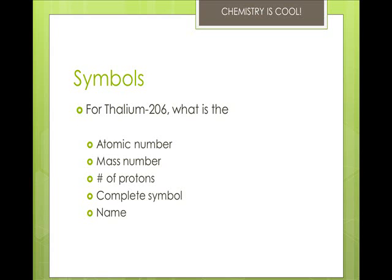Okay, so we need to look up the atomic number for thallium, and that's on your periodic table. The atomic number is 81. The mass number is in the description for the name, thallium-206. The mass number is 206.